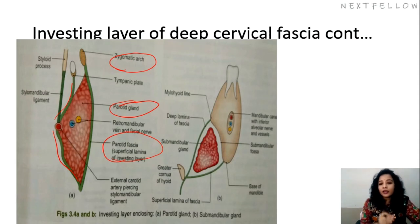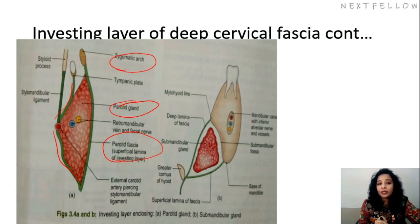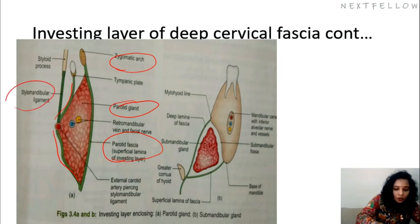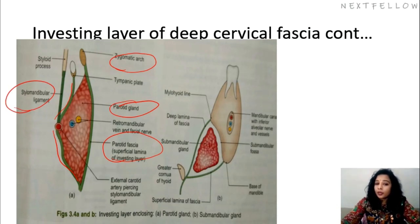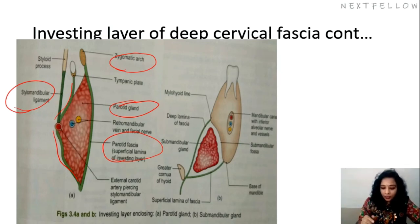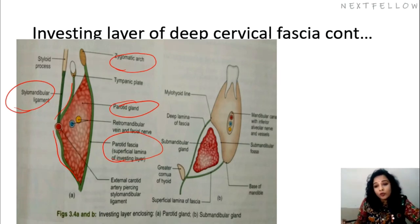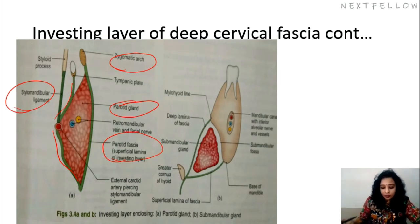On the deeper side, the deeper lamina is thin and loose and it gets thickened only between the styloid process and the mandible, forming the stylomandibular ligament. This stylomandibular ligament separates the parotid gland from the submandibular salivary gland. The deep cervical fascia also forms the false capsule of the submandibular salivary gland as well.